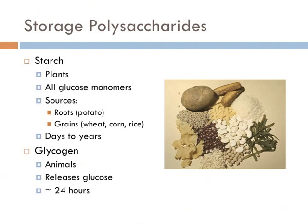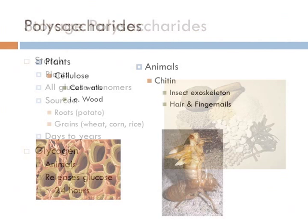In animals, we store energy as a different type of polysaccharide known as glycogen. Glycogen gets converted to glucose, which our bodies can then use to go through cellular respiration in order to carry out all of life's functions. It takes about 24 hours for glycogen to be converted to glucose.